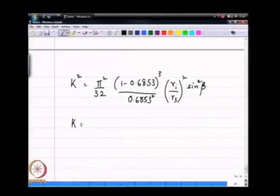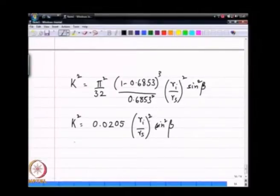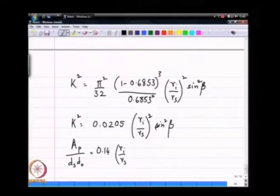I can take the square root of this. In fact, k squared if I do this computation, it comes to be 0.0205 times Ri over Rs squared times sin squared beta. All I now have done is taken the square root on both sides. I can relate this Ap over ds d0 to Ri over Rs and sin beta.